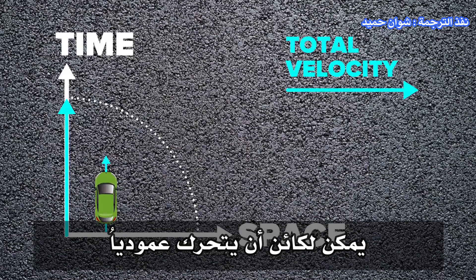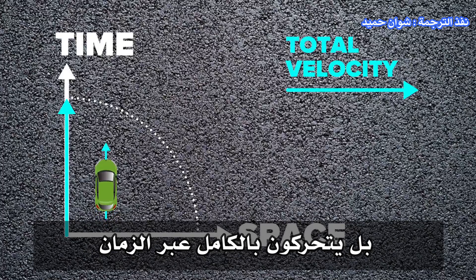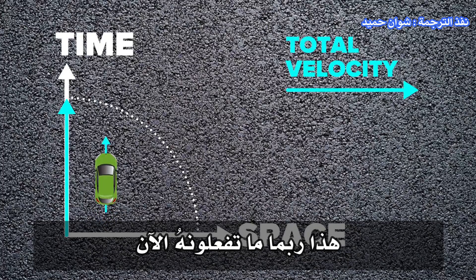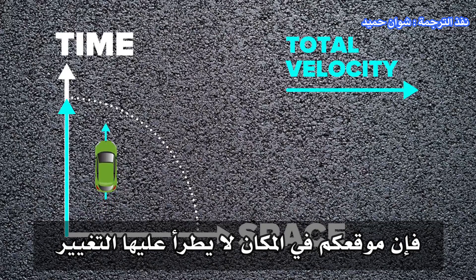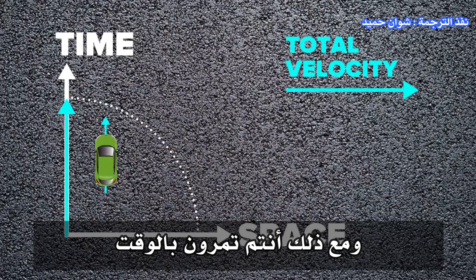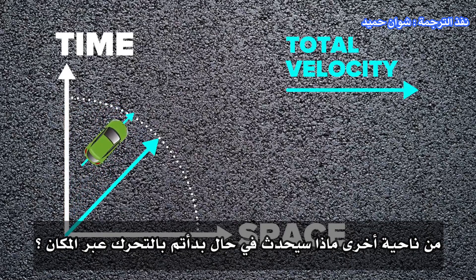We can mix these ideas with our earlier analogy. An object can move vertically - in that case, they're not moving through space, they're moving entirely through time. That's probably what you're doing right now. You're sitting and watching this video, so your position in space isn't changing. However, you are experiencing time.